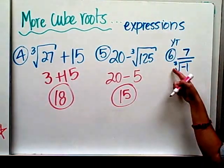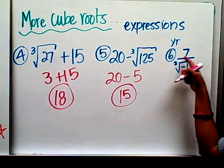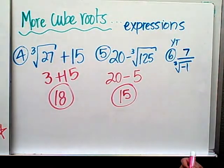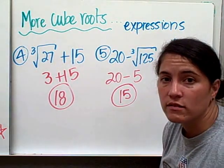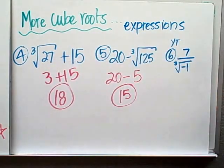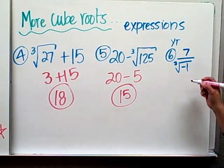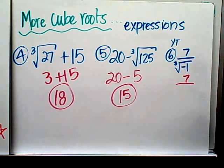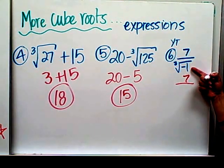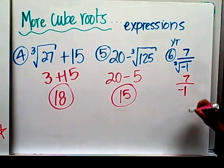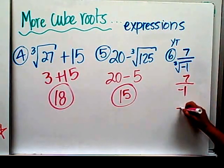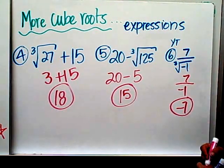So you try this one on your own. 7 divided by the cubed root of negative 1. Pause it, and then press play when you're ready to move on. I know that the cubed root of negative 1 is negative 1. And 7 divided by negative 1 is negative 7.